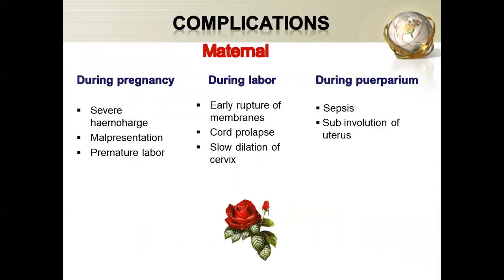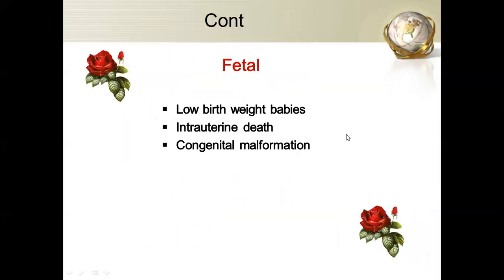Complications: maternally during pregnancy there will be severe hemorrhage, malpresentation, and premature labor. During labor there can be early rupture of membranes, cord prolapse, and slow dilatation of the cervix. Postpartum, there is risk of sepsis and sub-involution of the uterus. For the fetus, complications include low birth weight, intrauterine growth restriction, and congenital malpresentations.